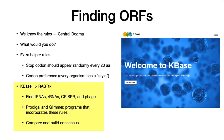The KBase program that predicts ORFs is called RAST-TK. It runs through a number of steps to determine the protein sequence. First, it will find all the tRNAs, rRNAs, CRISPR sequences, and phage — these have common conserved sequences that makes them easy to pick up. Then it runs two programs that take different approaches to finding predicted ORFs, typically four to eight thousand for a typical genome.